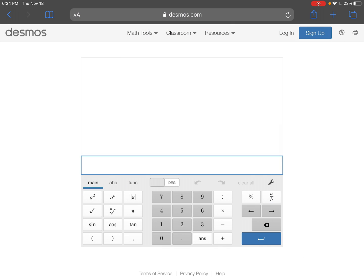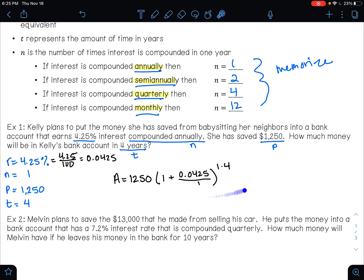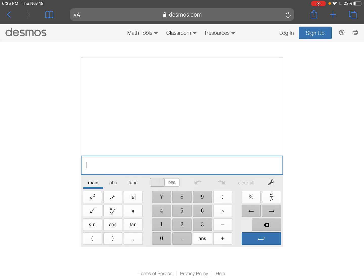And what I'm going to do is I am going to type in this part right here. So in my calculator, I'm going to have 1,250 parentheses. And I'm typing it in the exact way that we wrote it down. So 1 plus, and then I have 0.0425, I think. Yep. Divided by n was 1.